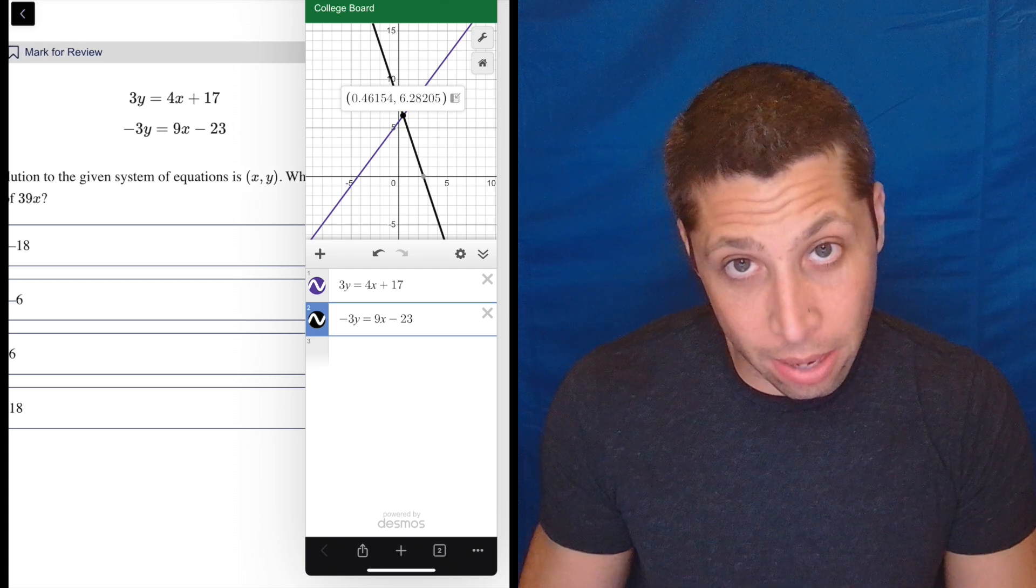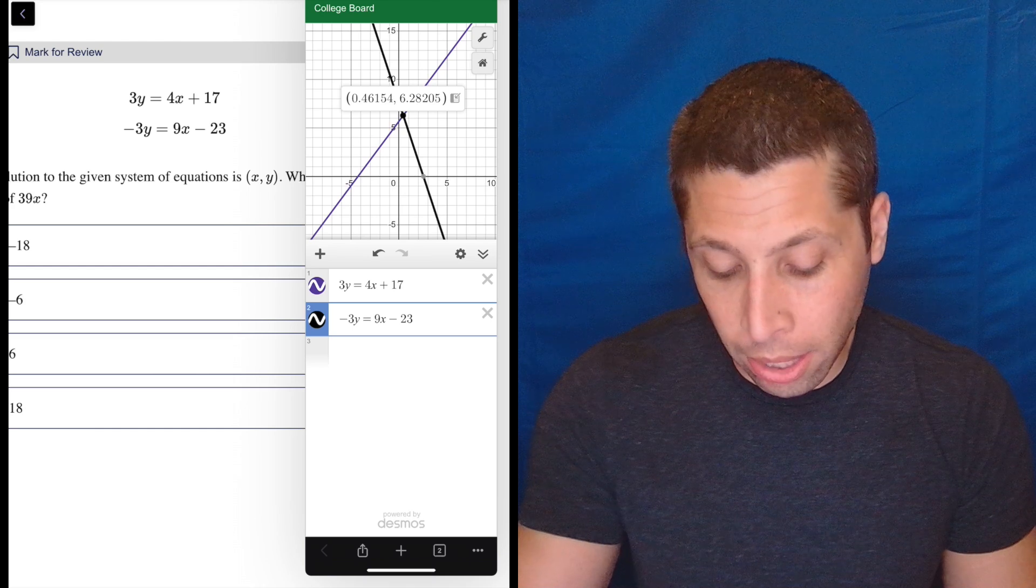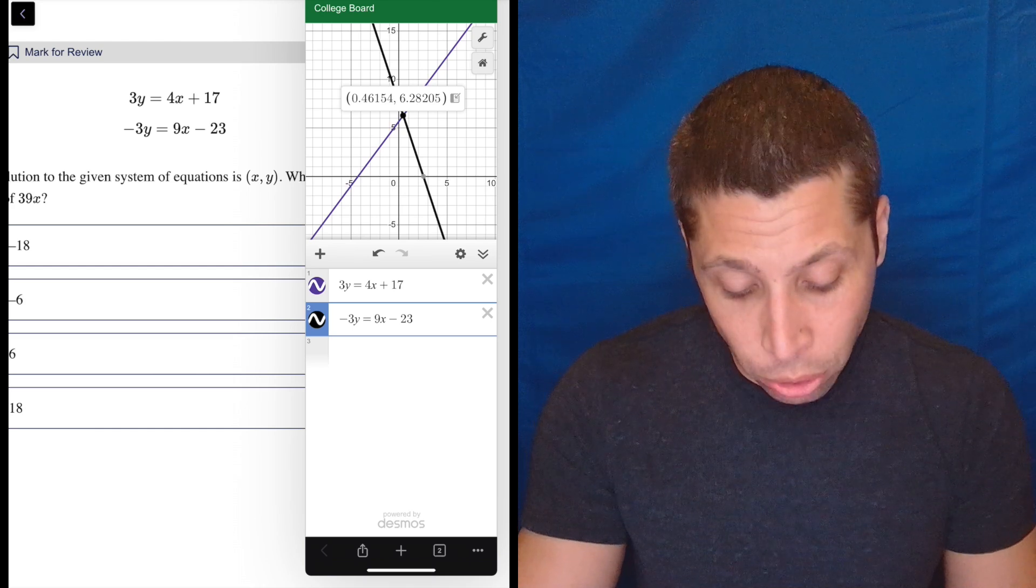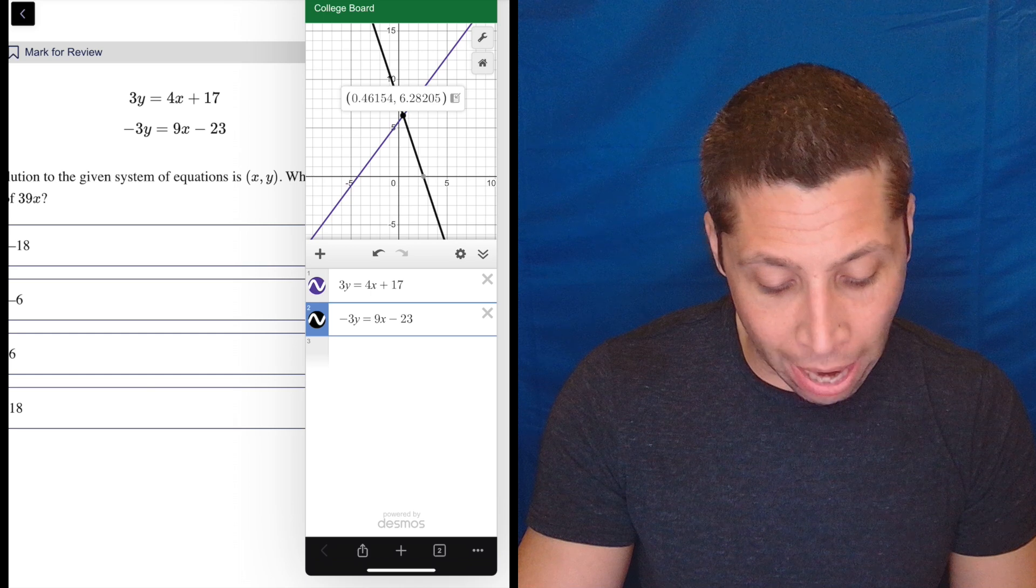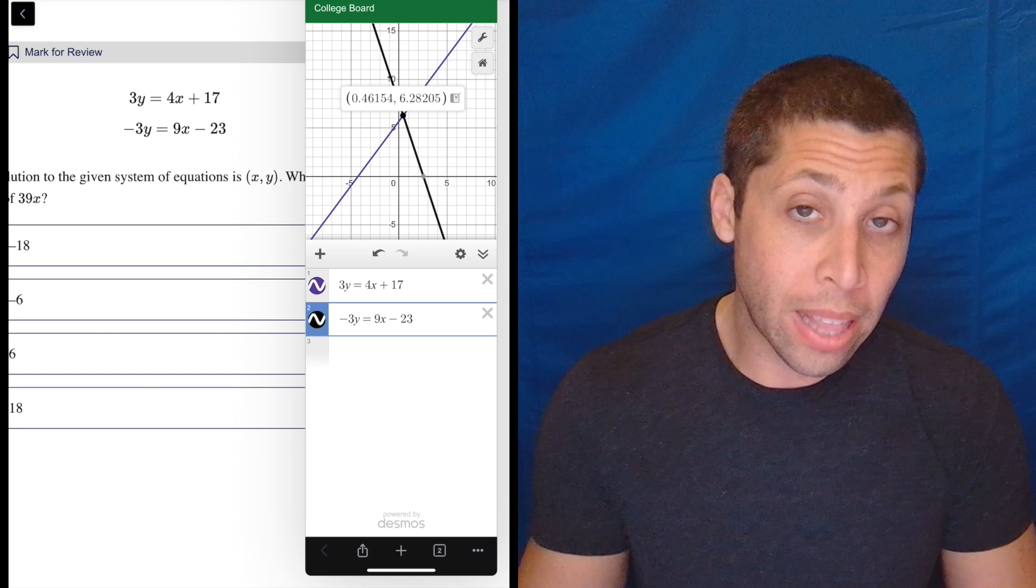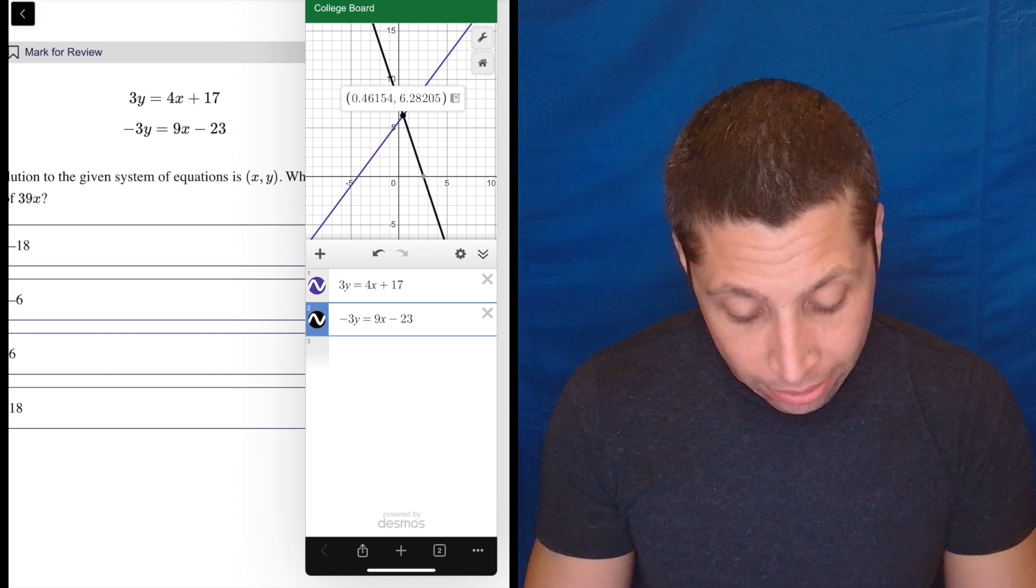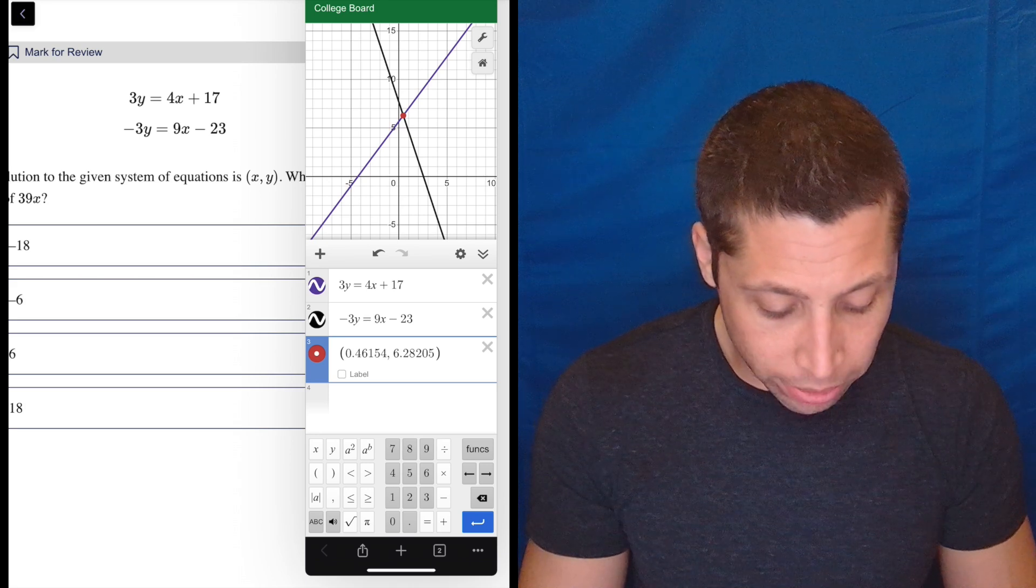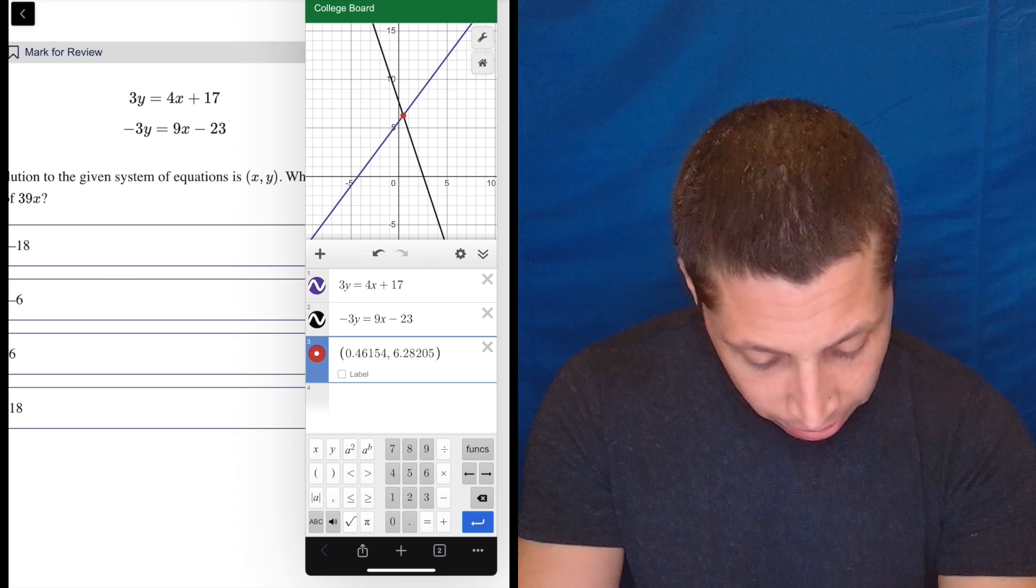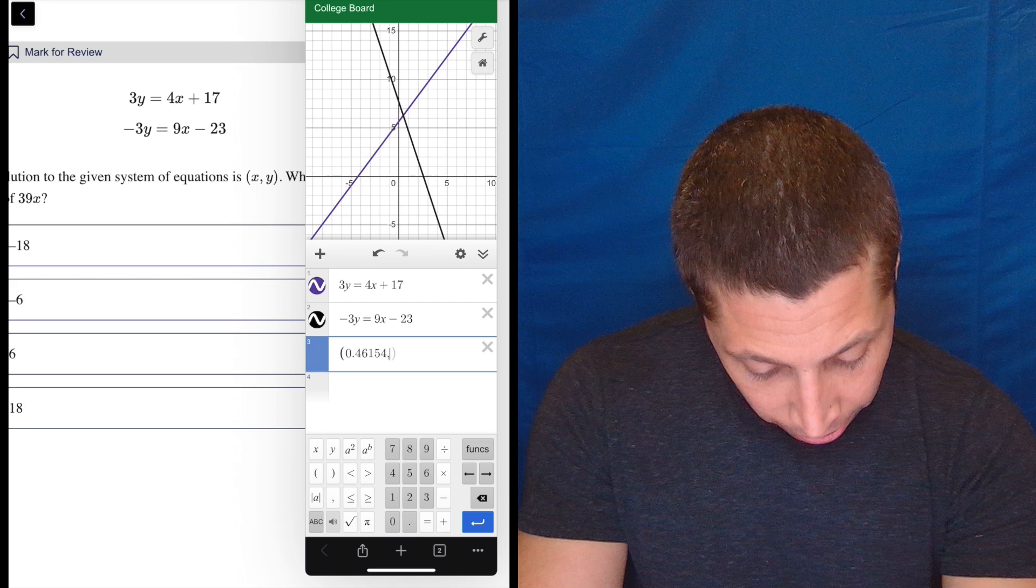Now the blue book version of Desmos, this is what I use, should have this little arrowy icon next to the point. That's just a copy paste thing. So I'm going to tap that and it's going to put it down there for me in a line. Now I only want the x coordinate. So let's just delete this other stuff.